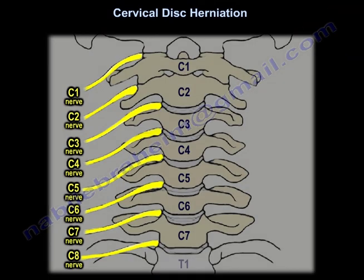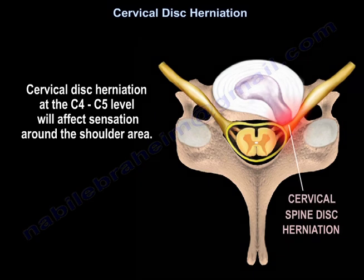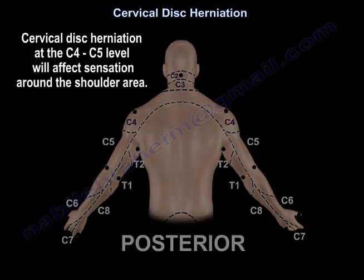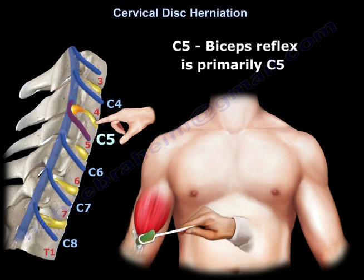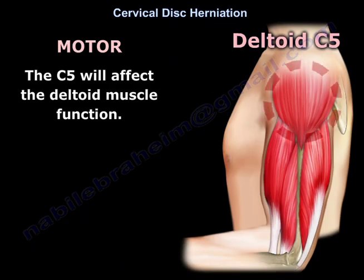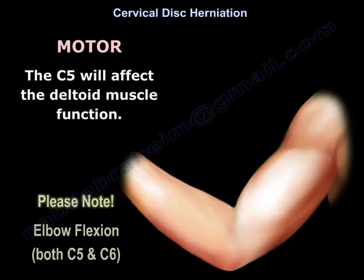For C4-C5 disc herniation, this will affect the C5 nerve root. It will affect sensation around the shoulder area. C5 will affect the biceps reflex. As regards the motor, C5 affects deltoid function. Please note that elbow flexion is C5 and C6.